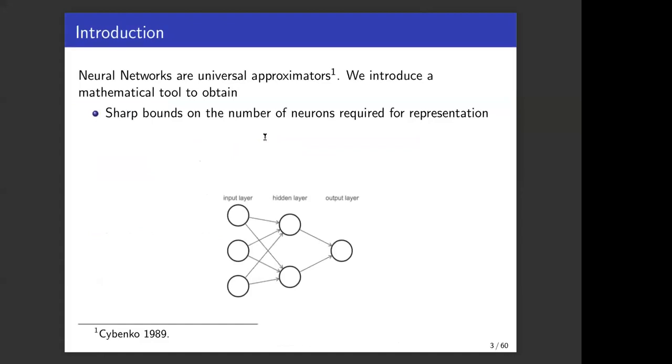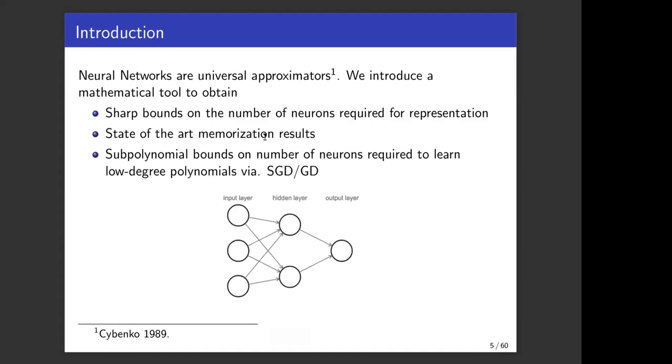As we all know, neural networks are universal approximators. Given any continuous function over a compact domain, we can approximate it to arbitrary accuracy in the L2 metric. We introduce a novel mathematical tool which allows us to obtain sharp bounds on the number of neurons required for representation. We obtain state-of-the-art memorization results and give polynomial bounds on the number of neurons required to learn low degree polynomials via stochastic gradient descent or gradient descent.